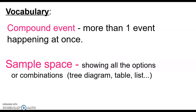Some vocab. A compound event is more than one event happening at once — it could be spinning a spinner and drawing a card, rolling a dice and flipping a coin, or picking a pair of socks and picking a pair of shoes. Sample space is a way of showing all of the different options or combinations you could get for a compound event. We're going to talk about tree diagrams, tables, and lists, and it will be on your quizzes and tests to show the sample space.